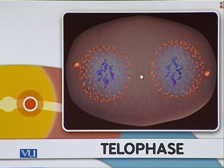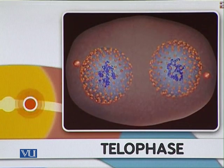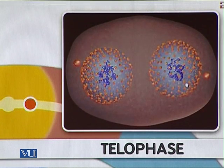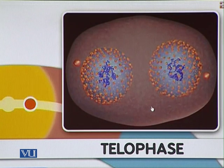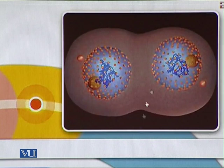The spindle fibers move to the opposite ends of the cell, and in telophase the nuclear membrane starts reforming. The chromosomes begin to decondense into non-discernible structures. The next stage is the division of the cell itself — cytokinesis.